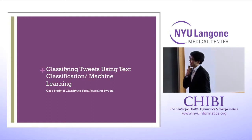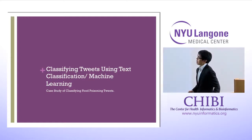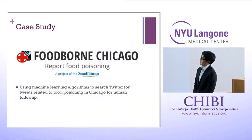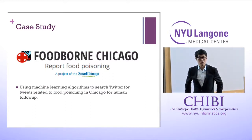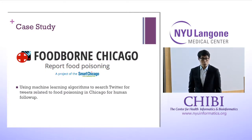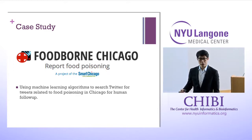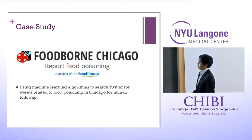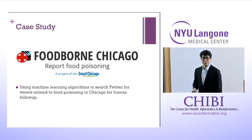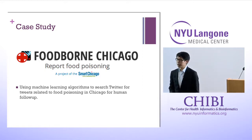That leads me to our case study: classifying food poisoning tweets through a group called FoodBorn Chicago. What these folks did was use Twitter to identify people who may have had food poisoning and get them to submit reports, so they could follow up with those restaurants and find out what was going on. They used machine learning algorithms to search Twitter for tweets related to food poisoning in Chicago for human follow-up — a human would reply to that person and try to get them to submit a report.